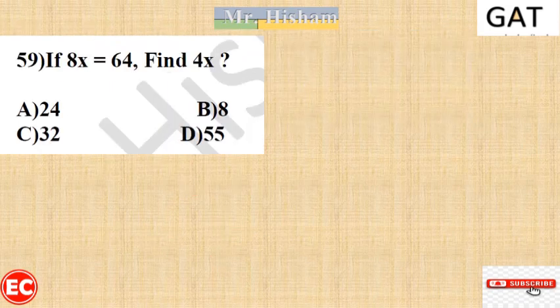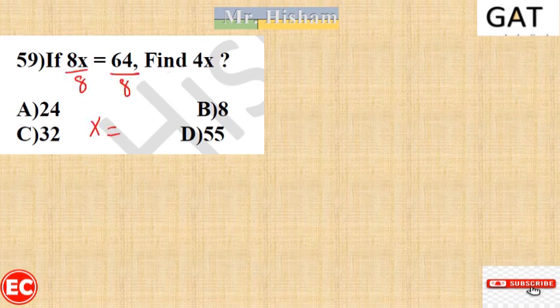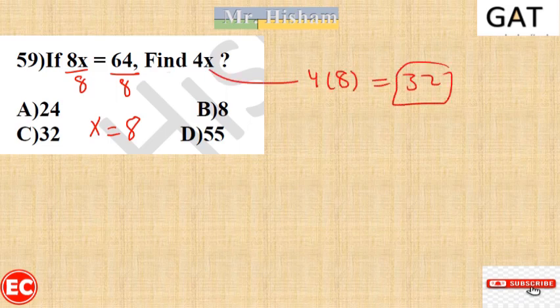Question 59: Very easy. 8x equals 64, so dividing both sides by 8 gives x equals 8. Now find 4x: 4 times 8 equals 32. The right answer is C.